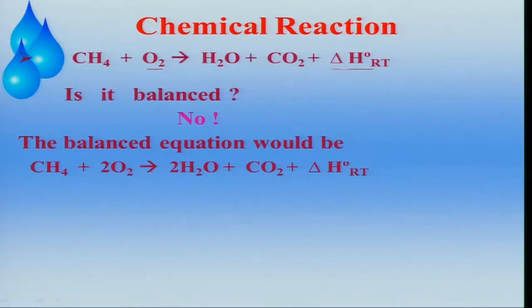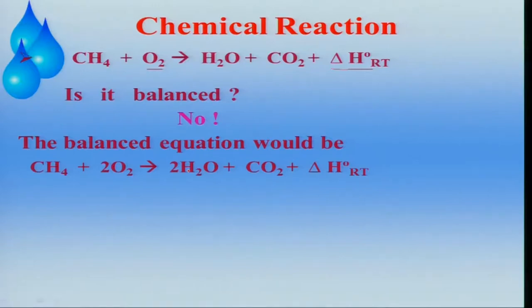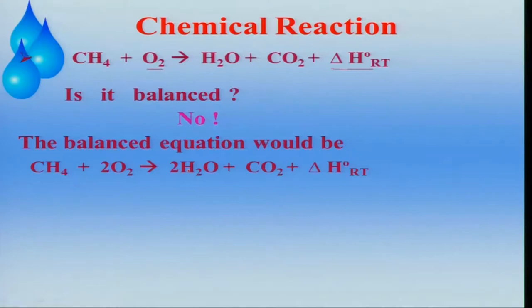What is the meaning of this balanced reaction? One mole of methane is reacting with two moles of oxidizer, going to two moles of water and one mole of carbon dioxide. On the left-hand side there are three moles, and on the right-hand side there are also three moles. Does equal moles on both sides mean it is balanced? We also need to look at mass.